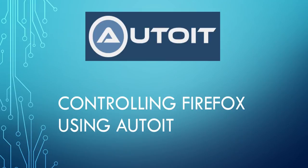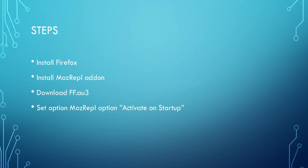Hello guys, this is Gene101 and we have a new tutorial. In this video we are going to learn how to control Firefox by using AutoIt. The steps are: you have to install Firefox, you have to install a plugin called MozRepl, and you have to download the AutoIt library called ff.au3.